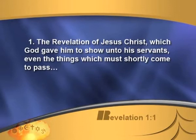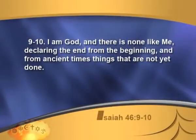Revelation 1 verse 1 says: 'The revelation of Jesus Christ which God gave him to show unto his servants the things which must shortly come to pass.' The Lord gives this information to us ahead of time so we can be sure of where we are in the stream of time. Isaiah 46 verses 9 and 10 says there is none like God — he lives outside the timeline, able to look at past, present, and future all at the same time. Amos 3 verse 7: 'I will do nothing unless I share it with my servants the prophets.' There is none like him, declaring the end from the beginning before it happens.